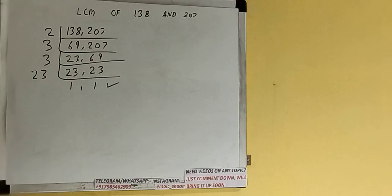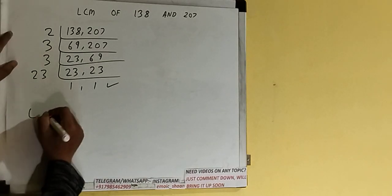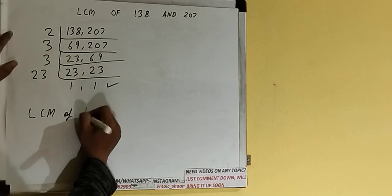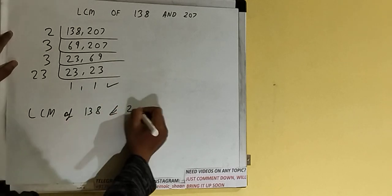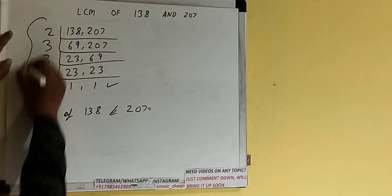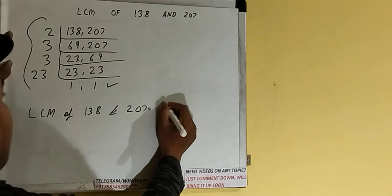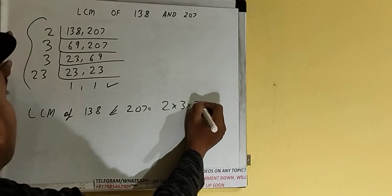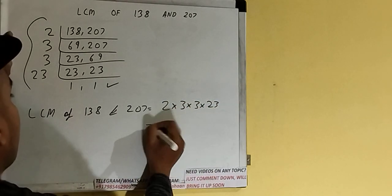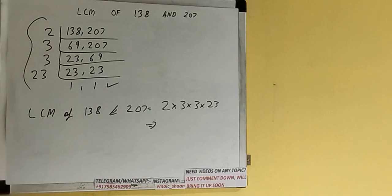Once we get 1, 1, we need to stop and do the last thing. The LCM of 138 and 207 would be to multiply whatever we have on the left-hand side, that is 2 × 3 × 3 × 23. So if you multiply, we'll be getting the answer as 414.